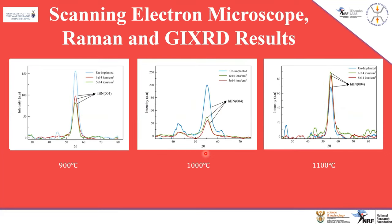For the XRD measurements, both before and after ion implantation we detected the (004) h-BN peak on all samples. The intensity of the peak changes after ion implantation, which can be attributed to residual stress caused by irradiation, as the lattice parameters are changing.